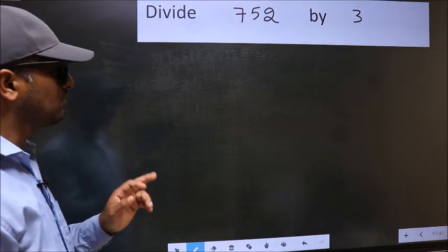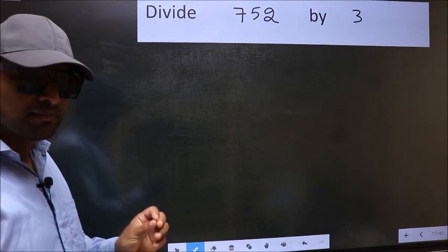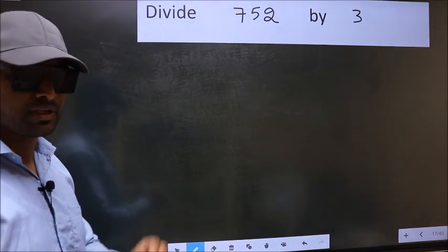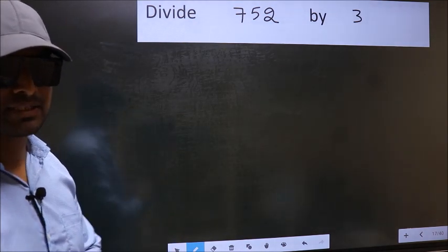Divide 752 by 3. While doing this division, many do this mistake. What is the mistake that they do? I will let you know. But before that, we should frame it in this way.